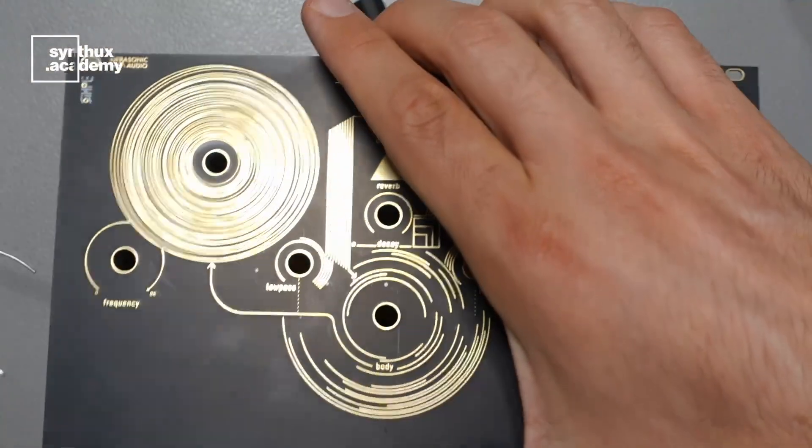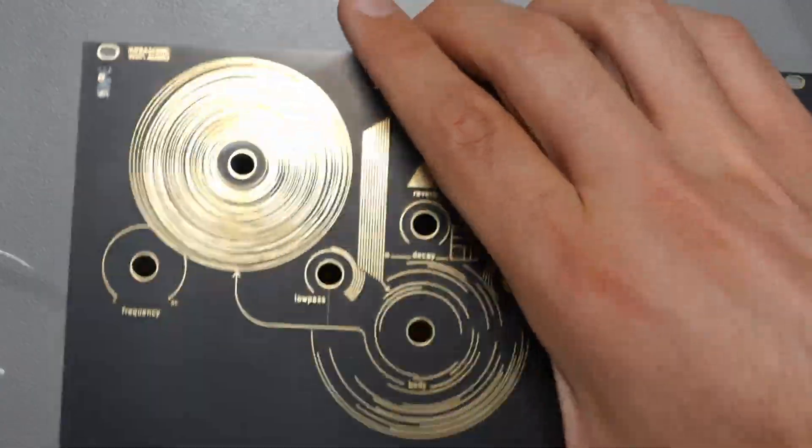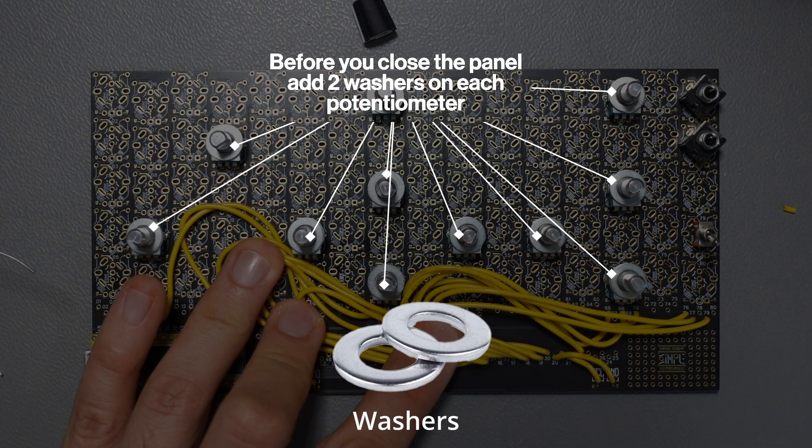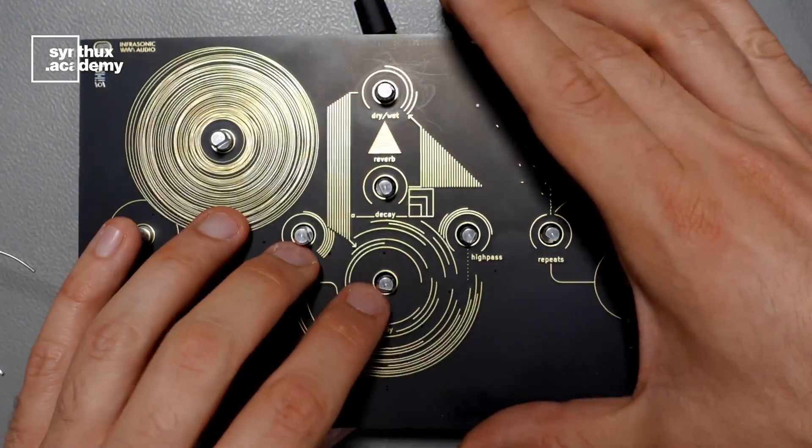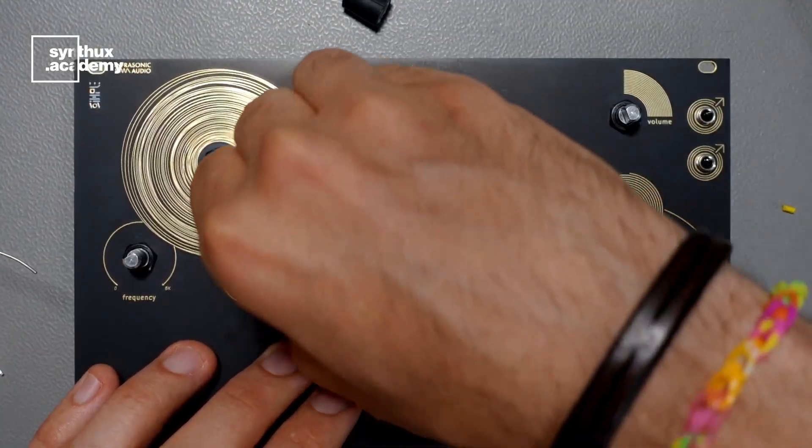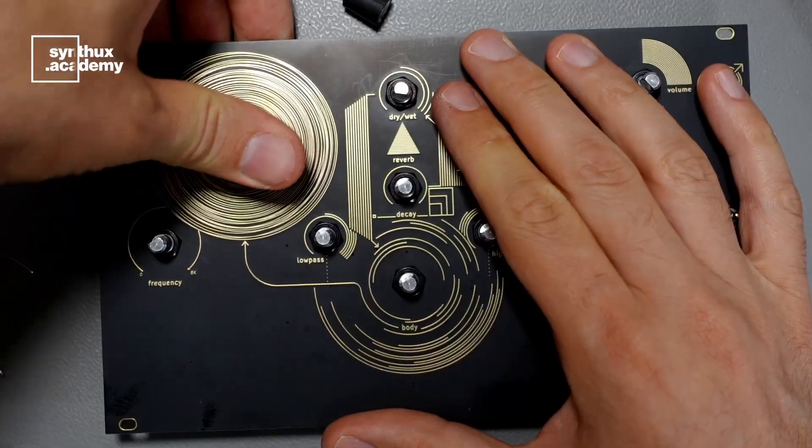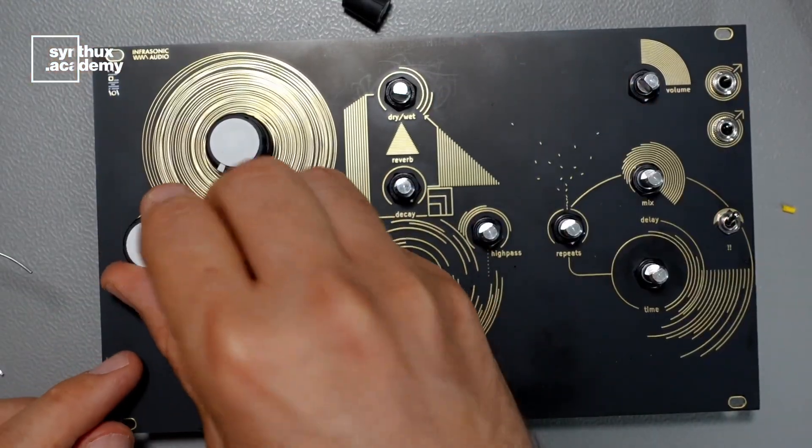We can now put the front panel on top. Close with all the nuts. You don't need any tools for that. You can just use your hands and stick the knobs in the right place. Enjoy your new instrument.